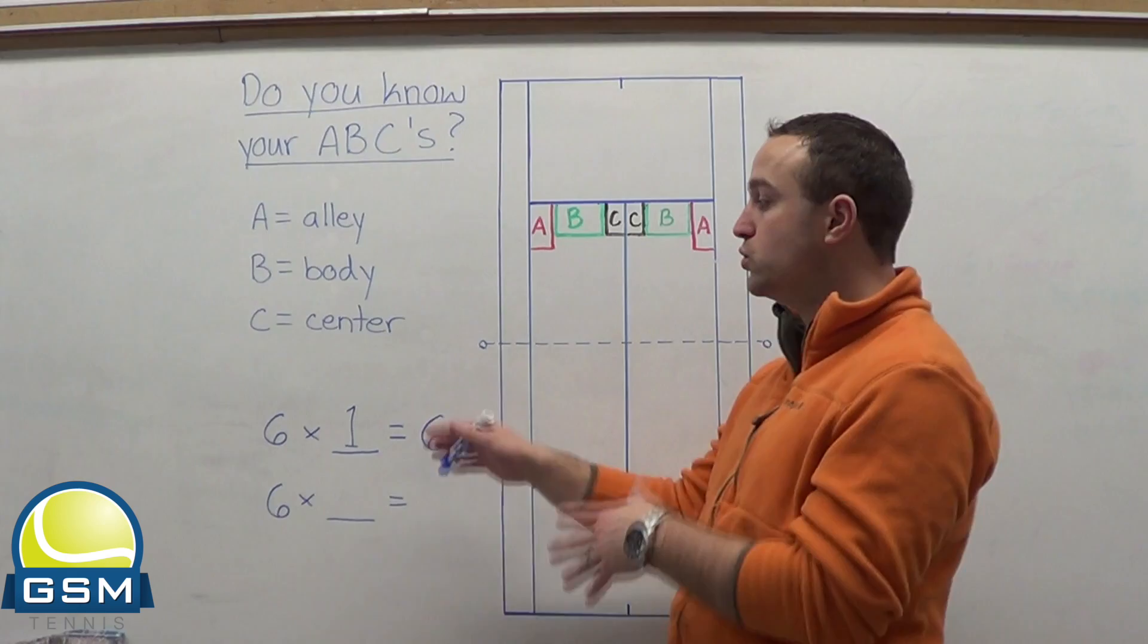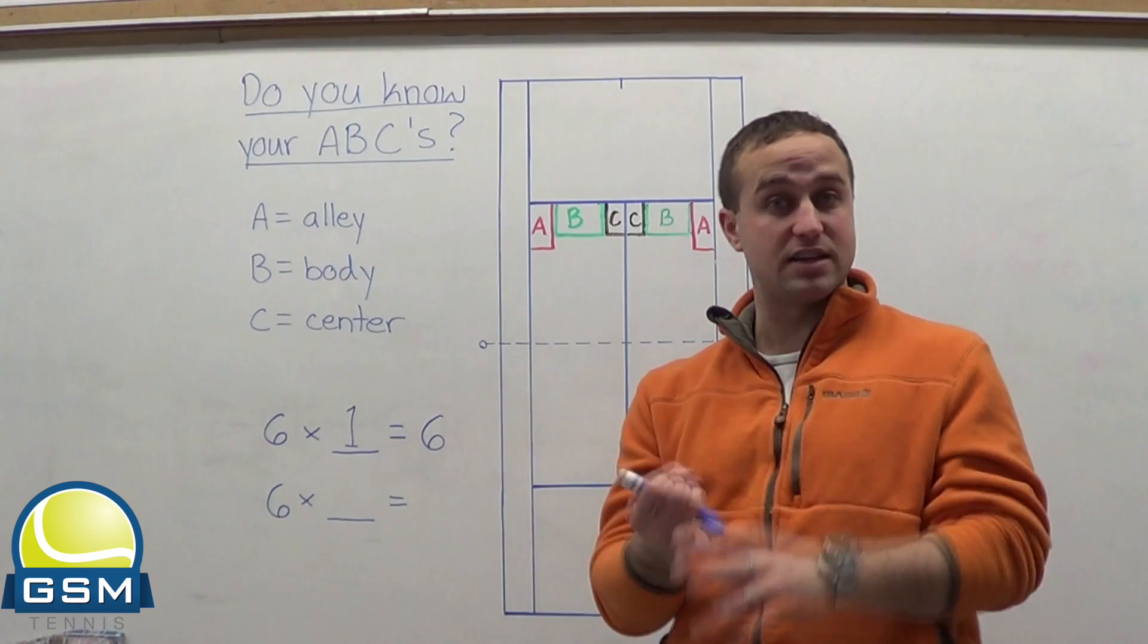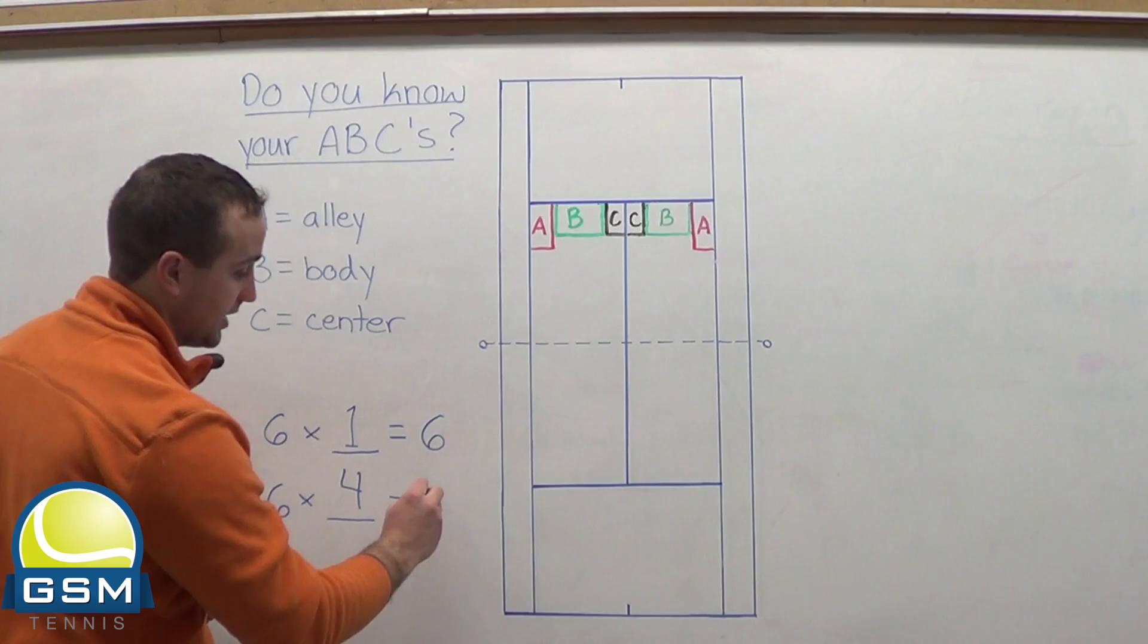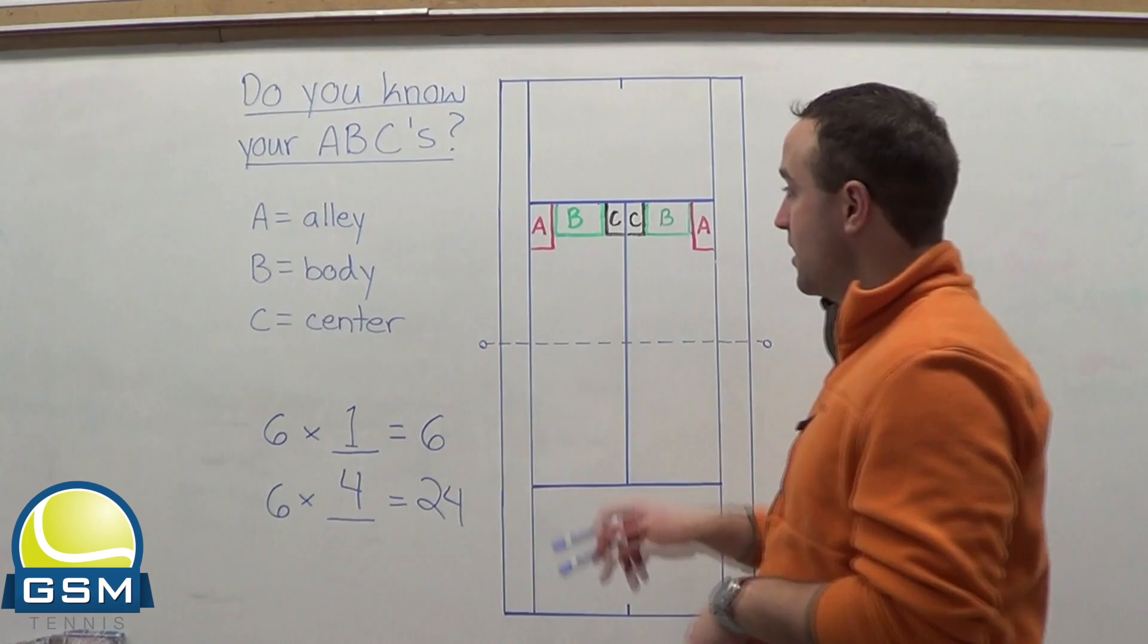Now, let's say you're a more advanced player. Well, there's basically four types of serves. You have the topspin serve, a flat serve, a slice serve, and a kick serve. So if we have four different types of serves, six times four, that gives you 24 possibilities. If you hit those three locations, three on deuce, three on the ad, six total, and you have four different types of serves.